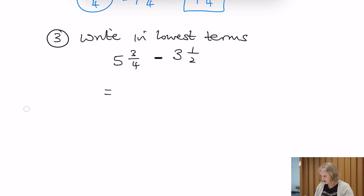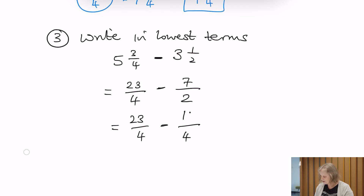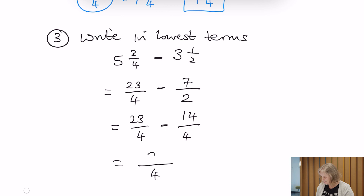Again, we've got mixed numbers — change them to improper fractions. 5 times 4 is 20, plus 3 is 23, denominator stays the same as 4. Now we're subtracting the second fraction: 3 times 2 gives us 6, plus 1 gives us 7, over 2 — denominator stays the same. The lowest common denominator is 4, so the first fraction stays as 23 over 4. For the second fraction: 2 times 2 gives us 4 for the denominator, and 7 times 2 gives us 14. Our answer has denominator 4, and we subtract the numerators: 23 minus 14 gives us 9 over 4.